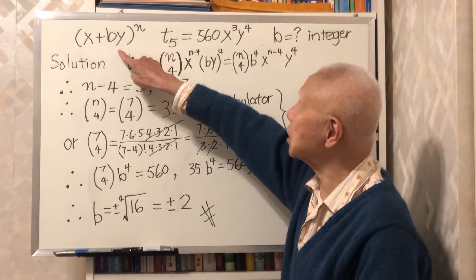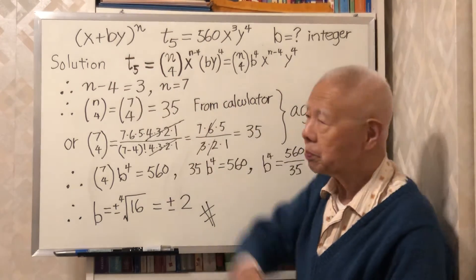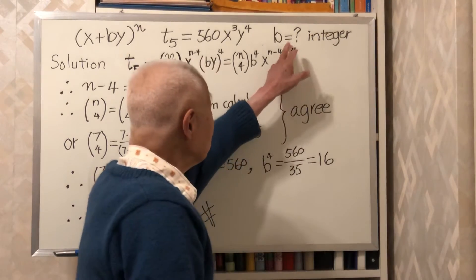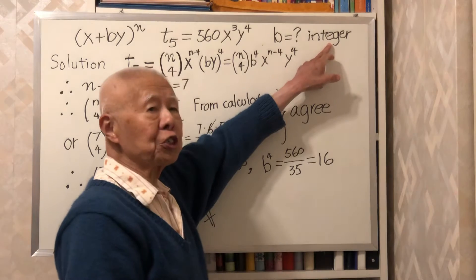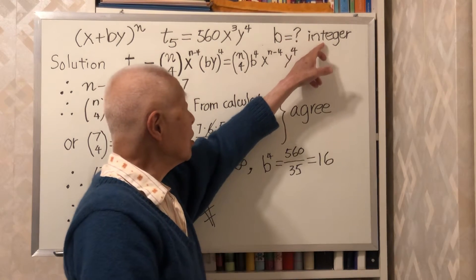What is b here? Given that b is an integer, so we want b is what integer?